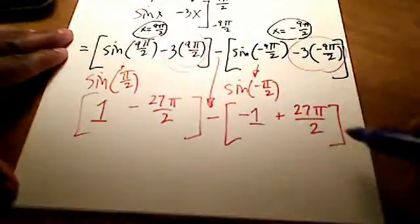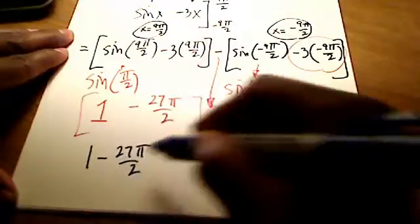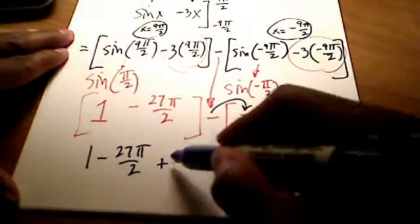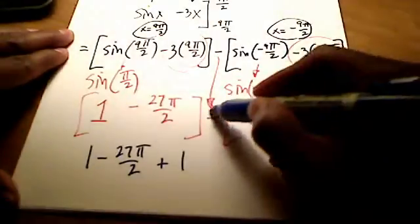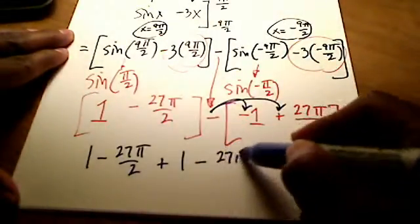I'm going to take the parentheses of the brackets away now. I've got 1 minus 27π over 2, right? And this negative times that negative makes it plus 1. And that negative times that positive makes it another minus 27π over 2.